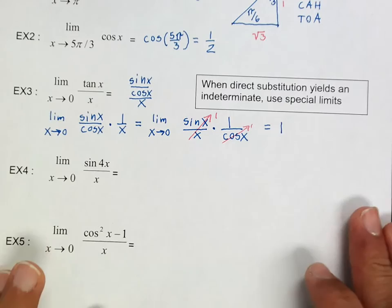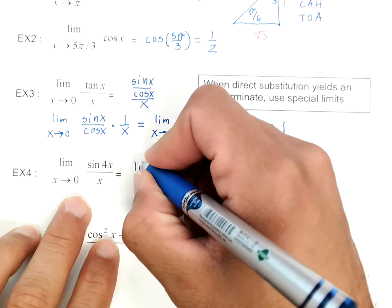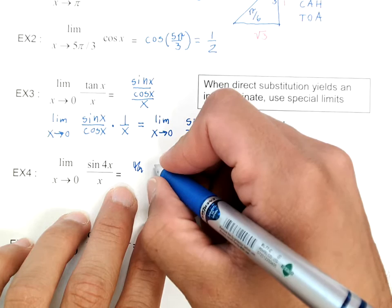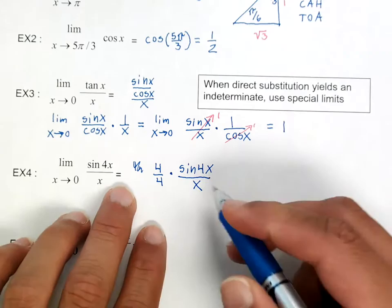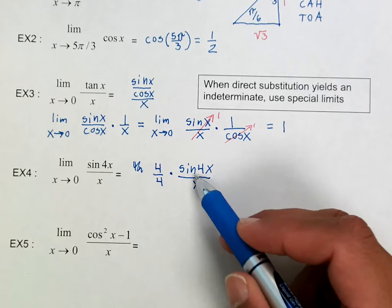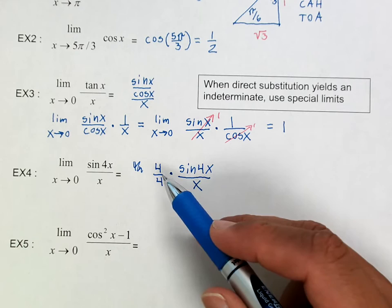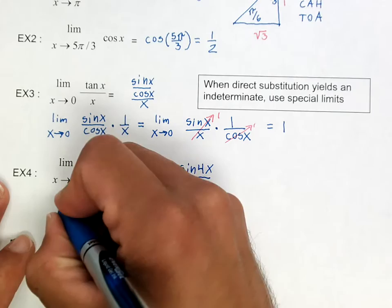Now the next one, the limit of sine of 4x over x. The thing that we can do here is we can write this as 4 over 4 times the sine of 4x over x. It may not be clear why I'm doing this, but you'll see. So if I write it like this, notice that I cannot factor this 4. All I've done so far is multiplying times 1, written as 4 over 4.